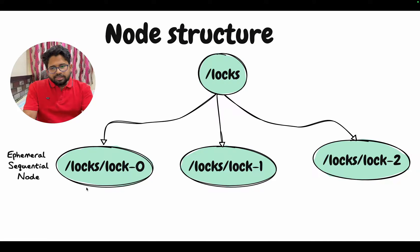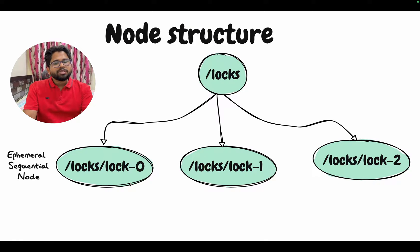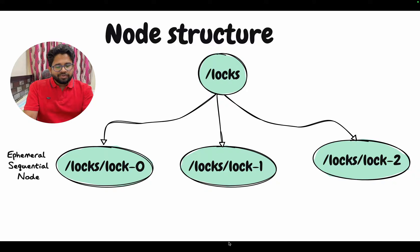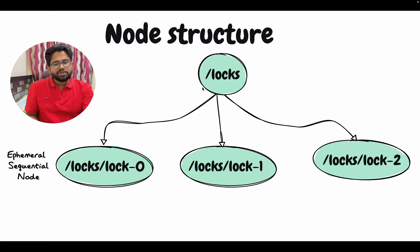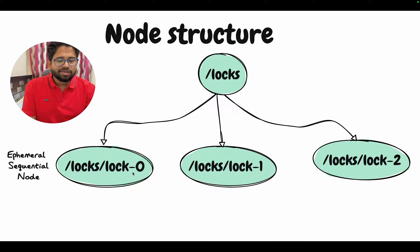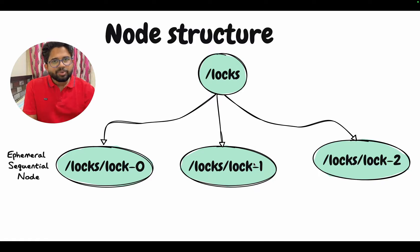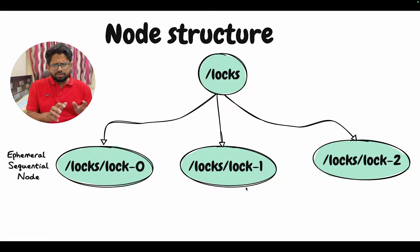All the clients — server 1, server 2, and server 3 — will try to create the ephemeral sequential node, and Zookeeper will make sure that the sequence numbers 0, 1, and 2 are unique and increasing. If the first server creates a node under slash locks, Zookeeper ensures the first server gets slash lock slash 0, the second gets slash lock slash 1, and the third gets slash lock slash 2. Different nodes will be created and we will leverage this concept.